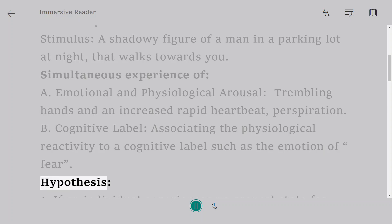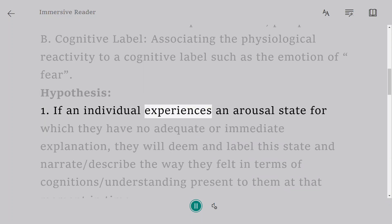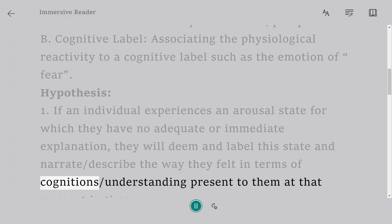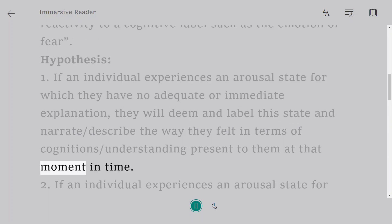Hypothesis 1: If an individual experiences an arousal state for which they have no adequate or immediate explanation, they will deem and label this state and narrate/describe the way they felt in terms of cognitions/understanding present to them at that moment in time.